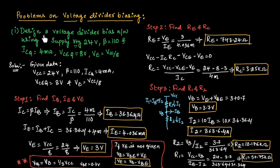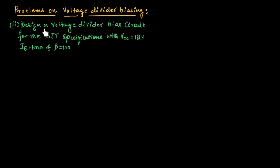Since the problem asks to design a voltage divider circuit, after finding all these values, you need to draw the voltage divider circuit and substitute all the calculated values. Let us consider the second problem where we need to design a voltage divider circuit for BJT specifications with VCC = 12 volts, IE = 1 milliampere, and beta = 100.